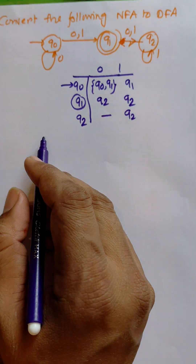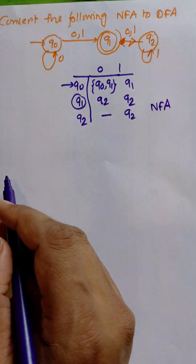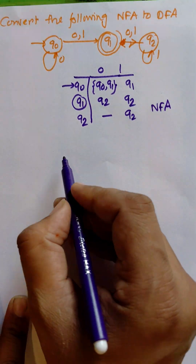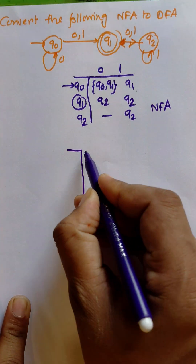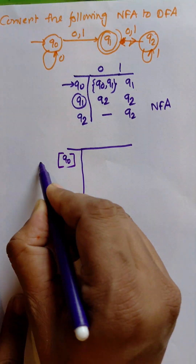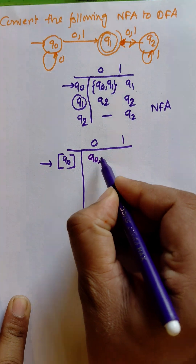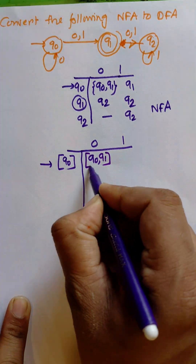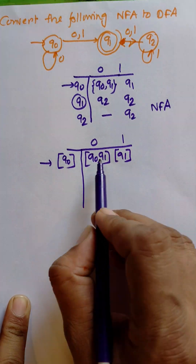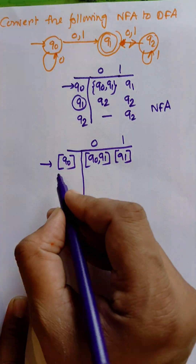So this is an NFA — now we need to construct the DFA. For the construction of the DFA, first of all we need to consider the initial state. This is the table for the DFA. We consider initial state q0 with inputs 0 and 1. For q0 to 0, the output is {q0, q1}, and for q0 to 1, the output is q1. These are two new states, so we consider them one by one.